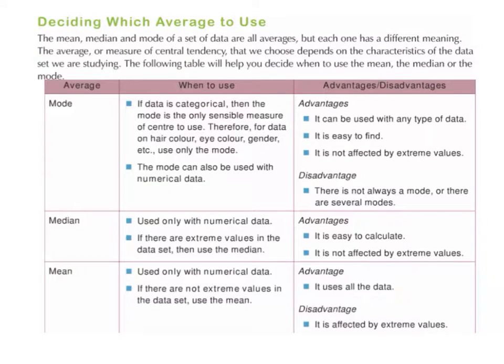Deciding which average to use. The mean, median and mode of a set of data are all averages, but each one has a different meaning. The average or measure of central tendency that we choose depends on the characteristics of the data set we are studying. The following table will help you decide when to use the mean, the median or the mode.